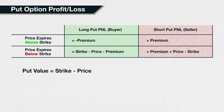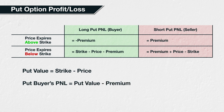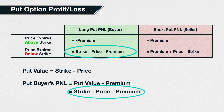The value of a put option that expires in the money is the strike price minus the underlying price at expiry, so we could write that as: put value equals strike minus price. To calculate the buyer's profit or loss, we then just need to subtract the premium they paid from the value of their put option at expiry. This leads to the put buyer's PNL as put value minus premium. When the put option expires in the money, the put value is strike minus price, so we can write the PNL as strike minus price minus premium.